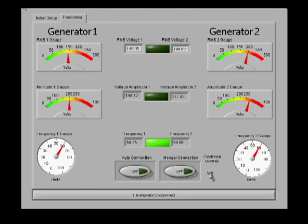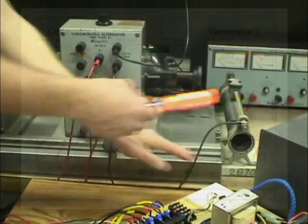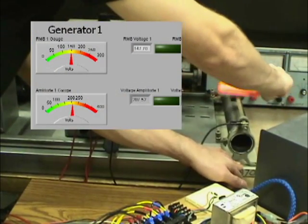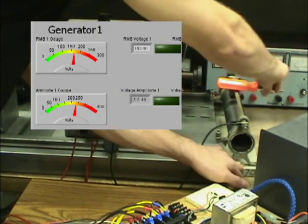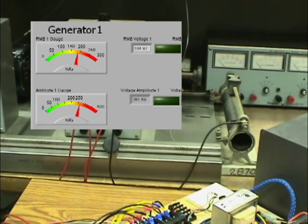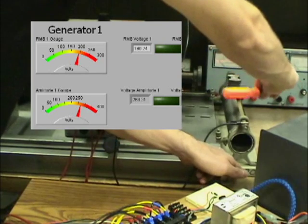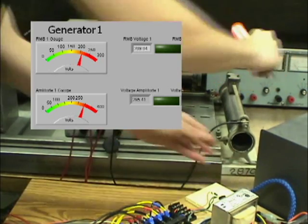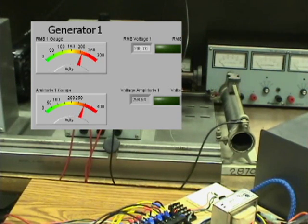Now, the voltage RMS of generator 1 needs to be adjusted to 208 volts by varying the field current using the rheostat. These adjustments will visually be displayed on LabVIEW.